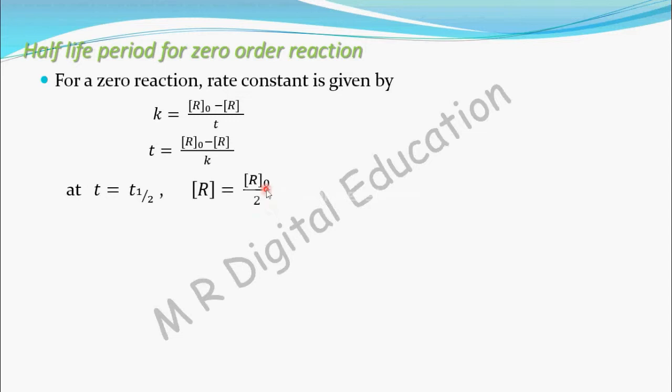Now substitute these values in this equation. Substitute T equals T half and keep this r0 as it is, and concentration of r as r0 by 2. Keep this k as it is.